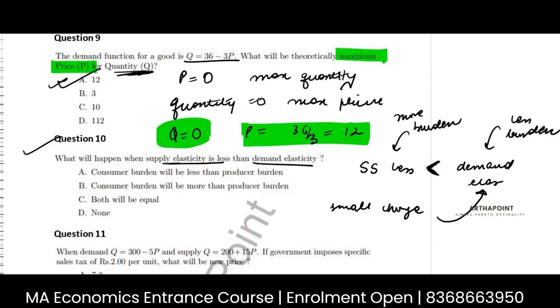In public economics, there is this derivation, I think, so it is in Musgrave and Musgrave. It's a very good book of public economics. They have derived exactly the value of the deadweight loss due to tax.